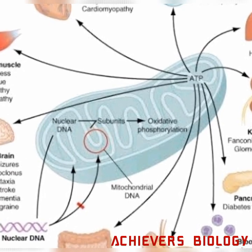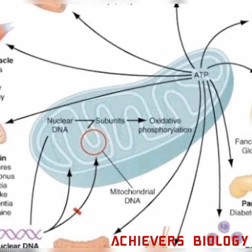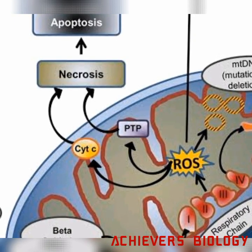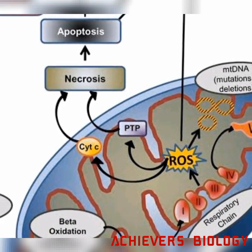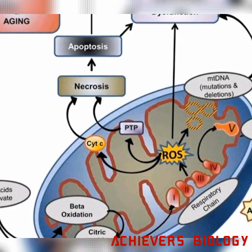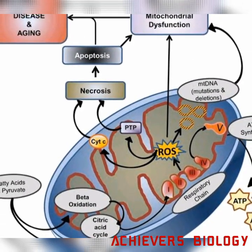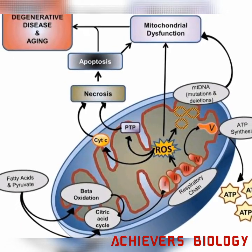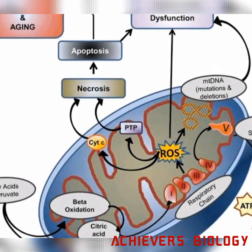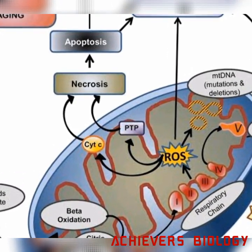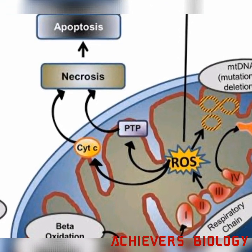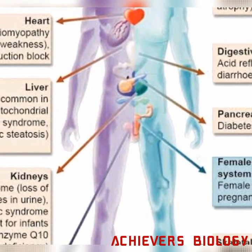It affects poor growth rate and causes muscle weakness. If we consider acquired conditions, mitochondrial dysfunction causes diabetes, Huntington's disease, cancer, Alzheimer's disease, Parkinson's disease, sarcopenia, and cardiovascular disease.